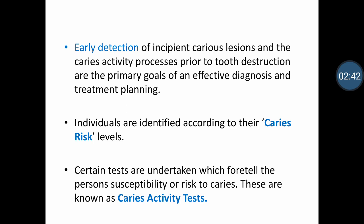The primary goal of effective diagnosis and treatment planning is to early detect incipient caries lesions and to understand the caries activity process so that we can stop or prevent further destruction of the teeth. Individuals are identified according to their caries risk levels. Certain tests are undertaken which foretell a person's susceptibility or risk to caries; these tests are known as caries activity tests. With caries activity tests, we can understand caries risk levels and segregate persons into high-risk or low-risk groups, then plan treatment accordingly.